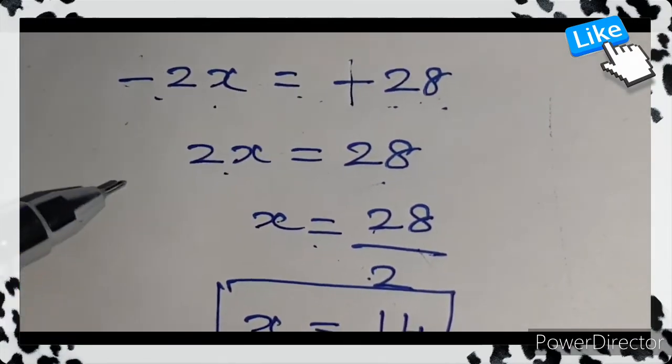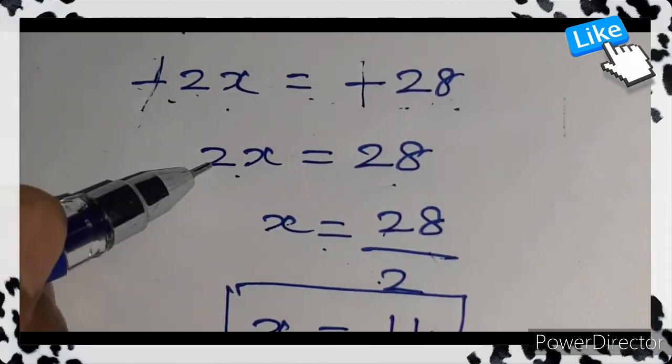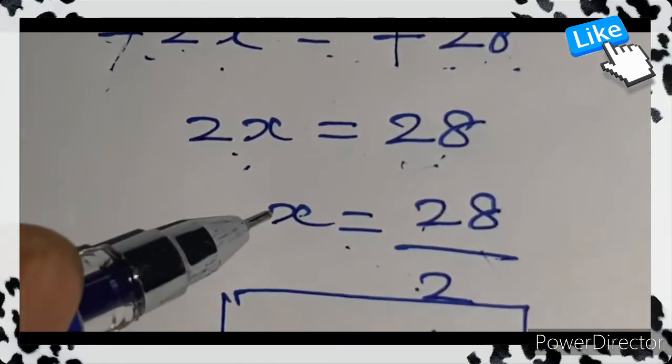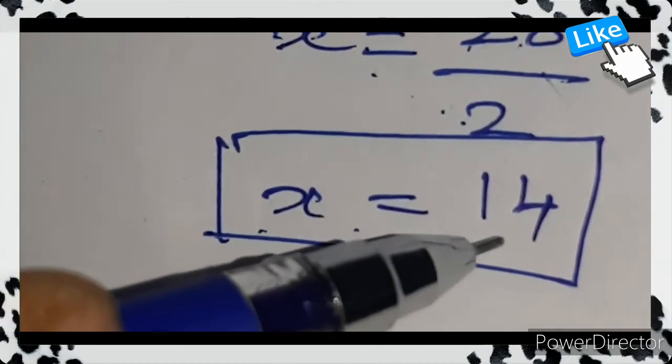Here also minus, here also minus, so we can cancel. 2x = 28, so x = 28/2, x = 14.